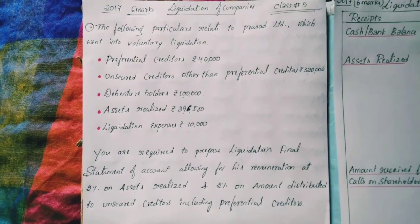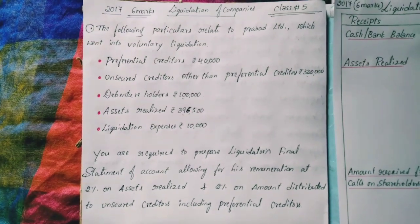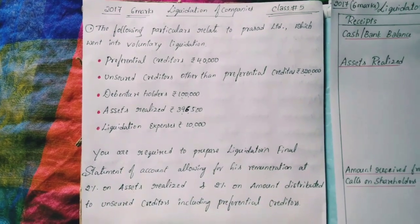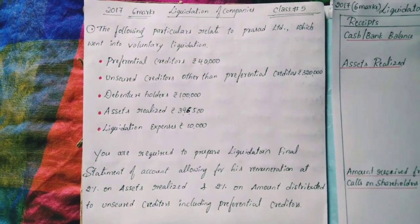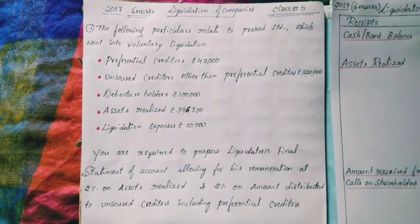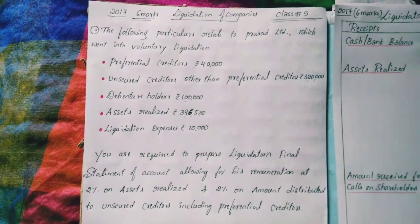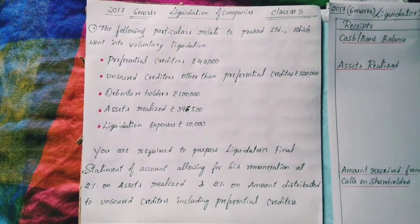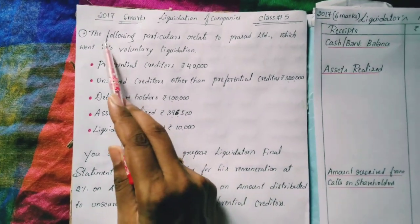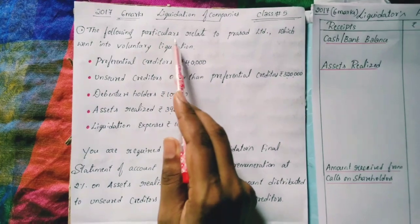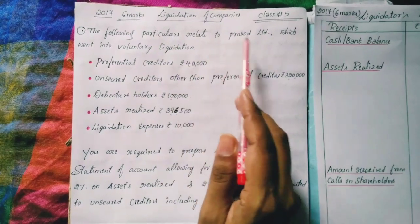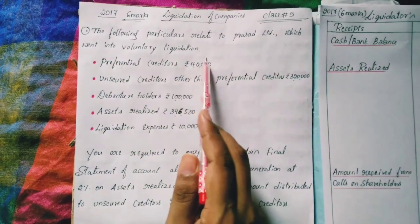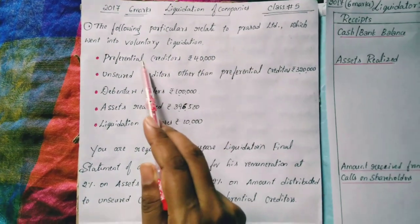Hi friends, today I am going to explain about liquidation of companies — 2018 and 2017 question paper six marks questions. First, the 2017 question paper six marks: the following particulars are related to Prasad Limited, which went into voluntary liquidation.